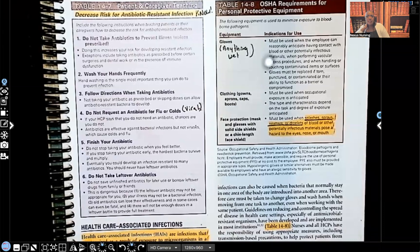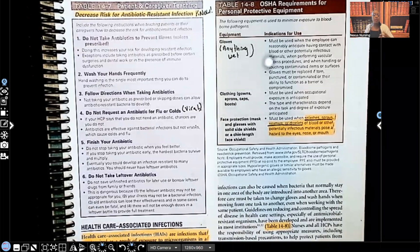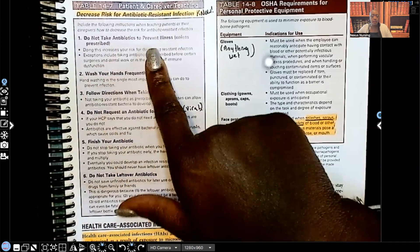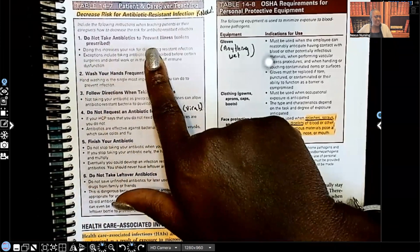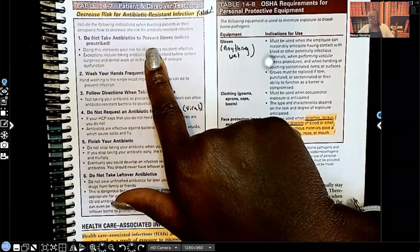And so the doctor, the nurse practitioner went ahead and gave them that antibiotic. And now that they really need it because they have a bacterial infection, your body's resistant to all those antibiotics. So it's very important to help decrease that risk for antibiotic-resistant infection. Important things to teach a patient: do not take antibiotics to prevent an illness. So nothing's wrong with you, but you're taking an antibiotic because you think it's going to prevent illness. Absolutely not. That's not how it works. You're going to teach that to the patient. Oh, sorry.